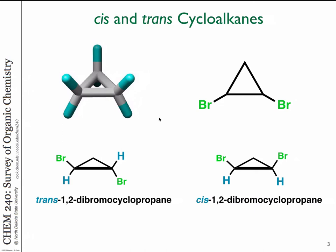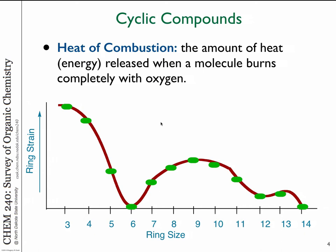Restrictive rotation causes the top and bottom of the ring to be different. We were talking about various strain energies in ring compounds, and depending on the size of the ring, there are different contributors to the energetics of that molecule, and so by measuring the heat of combustion, you can compare directly the different ring sizes. So what are the three pieces of strain energy that are involved in a ring compound? What kinds of strain have we talked about? Torsional strain.